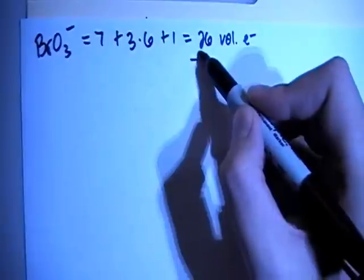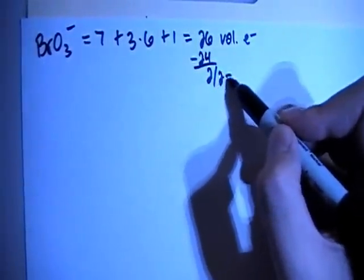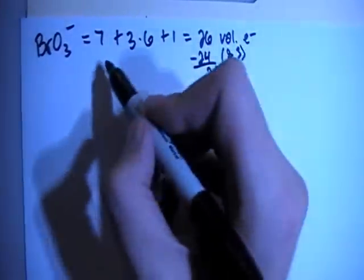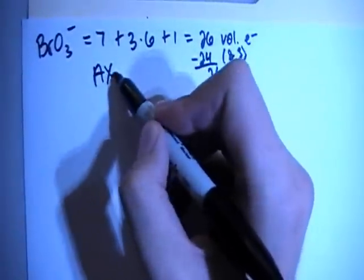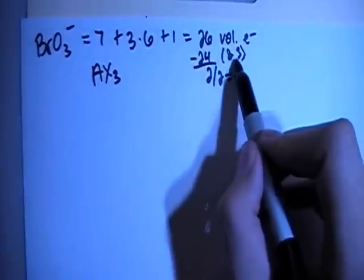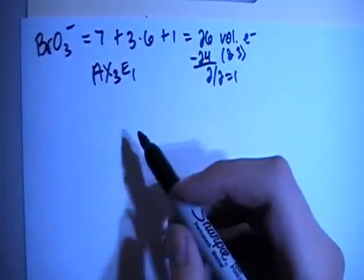Subtract out the largest multiple of 8, which is going to be 24, leaves you with 2, divide that by 2 gives you 1. 24 is 8 times 3, so that means that this shape is going to be an AX3, so central atom, 3 peripheral atoms, AX3 is 8 times 3, E1, with 1 non-bonding pair on the central atom.